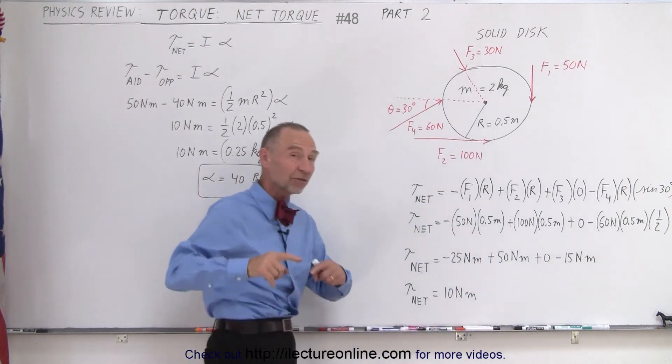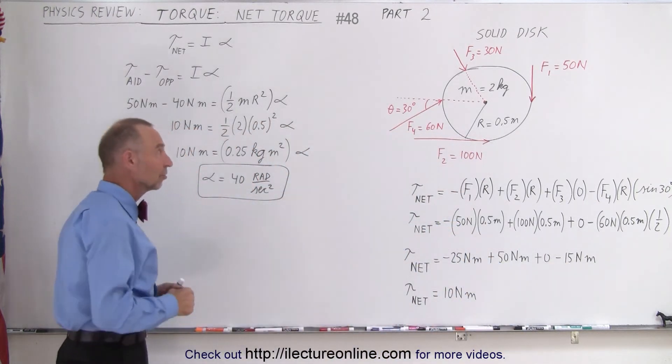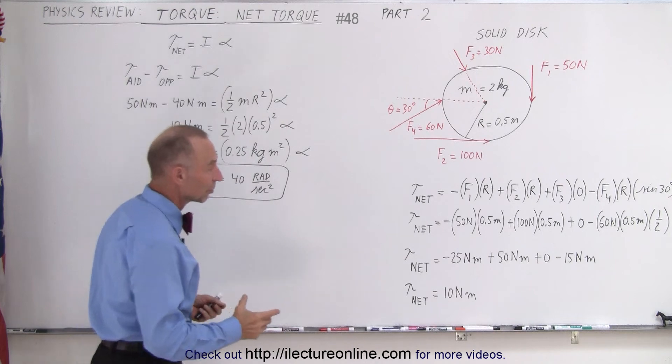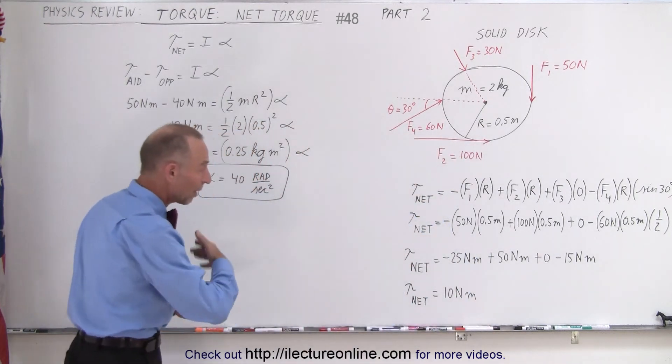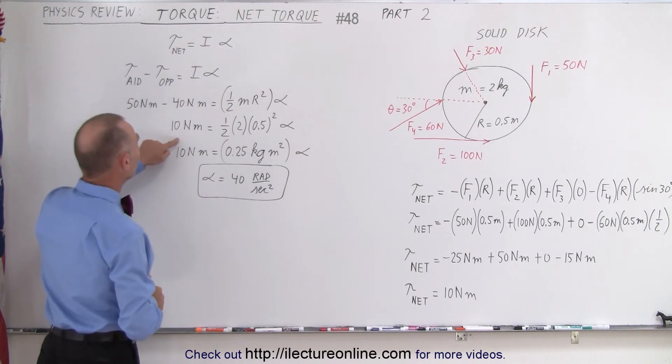Here are the two opposing forces that would cause the disc to rotate in a clockwise direction, but this is bigger than those two combined, so the net result is a positive 10 Nm.